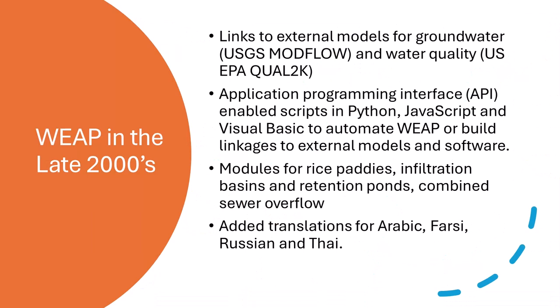In the late 2000s, Weep gained links to external models for groundwater — Modflow — and water quality — Qual2k. An application programming interface, or API, enabled scripting in Python, JavaScript, and Visual Basic to automate Weep or build linkages to external models and software. Modules were added for rice paddies, infiltration basins, retention ponds, and combined sewer overflow, and translations for Arabic, Farsi, Russian, and Thai.